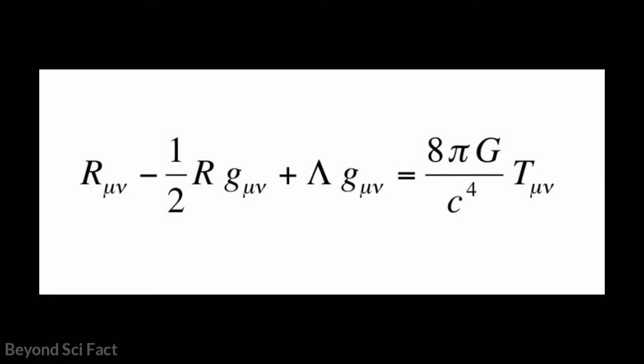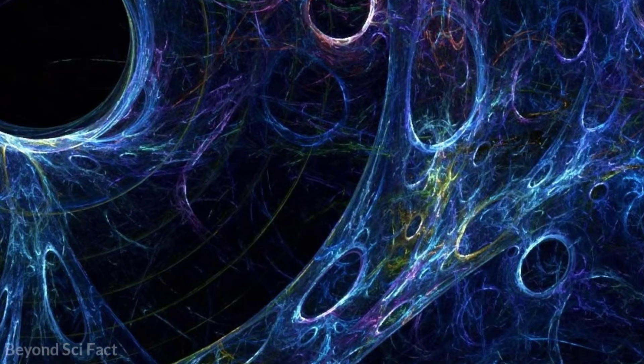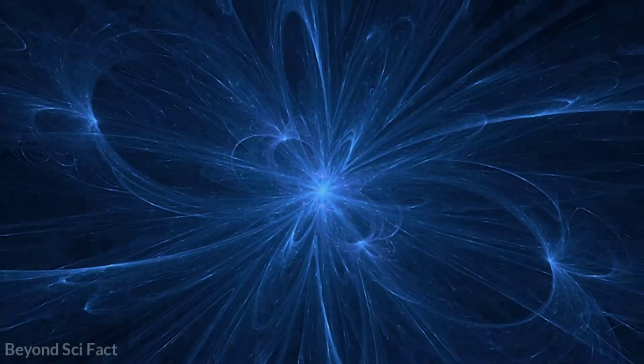Today I'm going to discuss one of the biggest blunders made by Einstein in his field equation of general relativity. It is closely related to one of today's biggest cosmological topics: dark energy and quintessence.